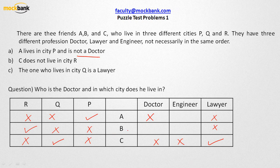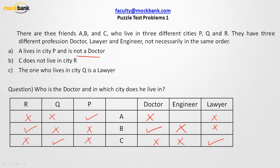Now let us appreciate how quickly we are getting the information. Since A is not a doctor, and C is also not a doctor, who is going to be a doctor? B is going to be a doctor. Now since B is a doctor, B cannot be anything else — B is not an engineer. C is not an engineer either. Who is the engineer? Only A is the engineer.